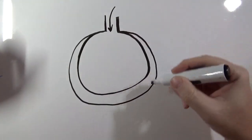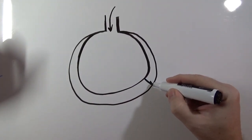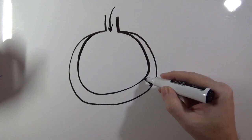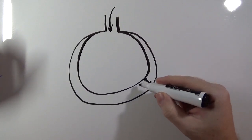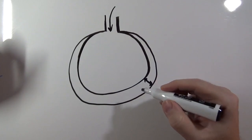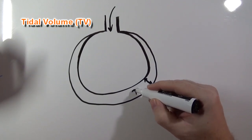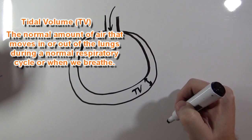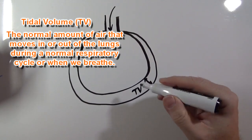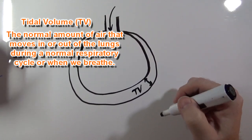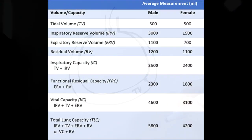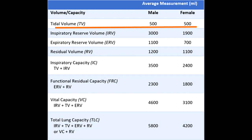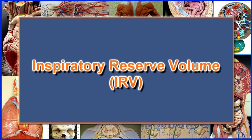So we breathe in, lungs expand to here, and then we breathe out and they contract back down to this size right here. This volume right here is tidal volume — the normal amount of air that we breathe in and out during a respiratory cycle. The average tidal volume for both males and females is 500 milliliters.